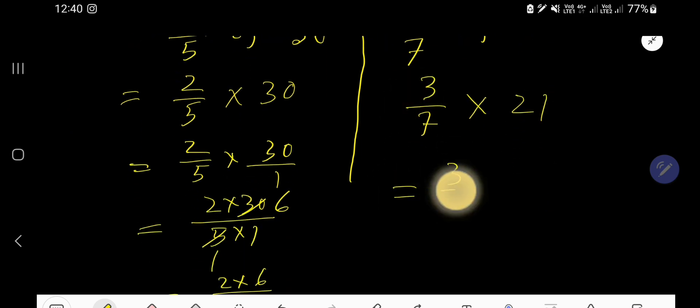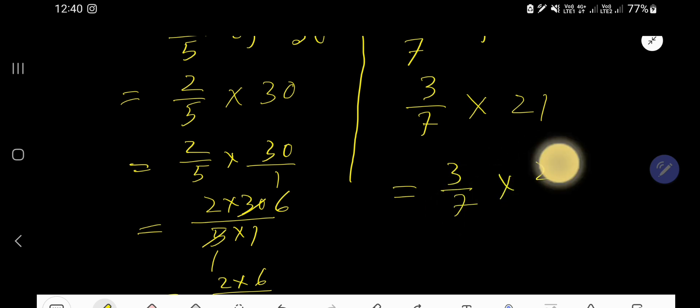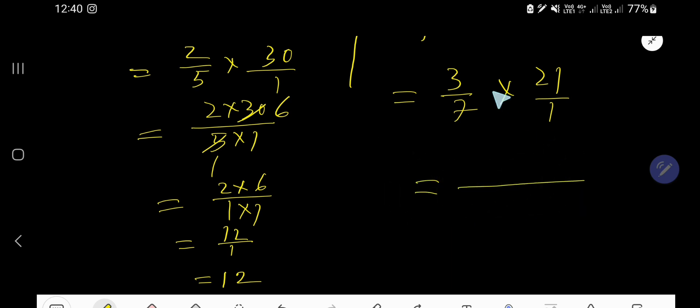Then change this whole number to a fraction, taking 1 as a denominator. Now multiply top to top numbers, then bottom to bottom numbers. Now reduce.